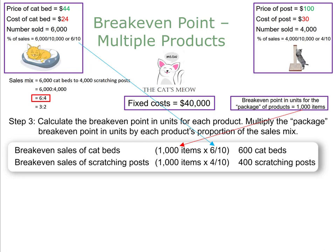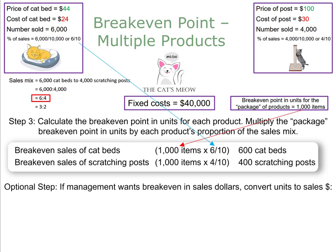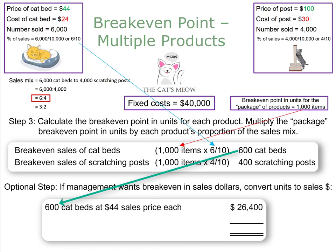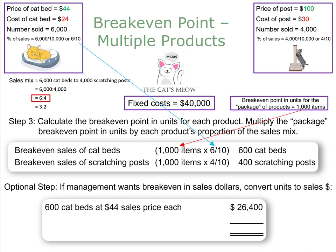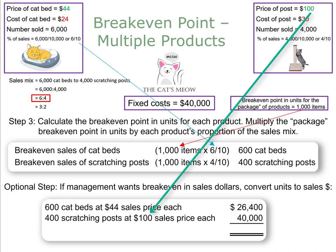We can also calculate the break-even point in sales dollars. Take the 600 cat beds and multiply by the $44 sales price to get $26,400 in cat bed revenue. Take the 400 scratching posts and multiply by the $100 sales price to get $40,000 in scratching post revenue. That gives us total sales revenue of $66,400 required to break even.